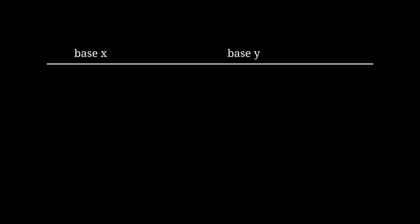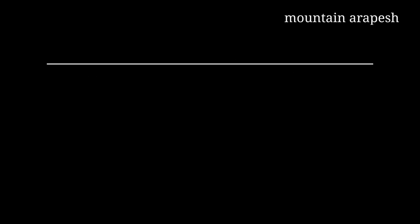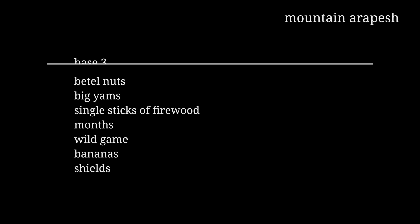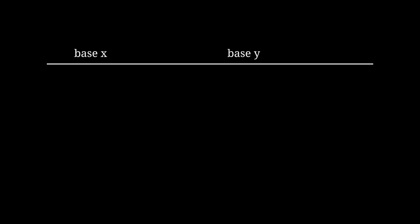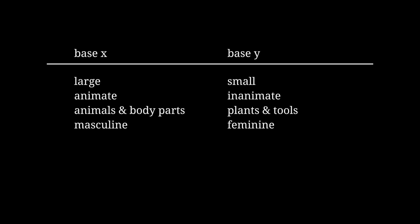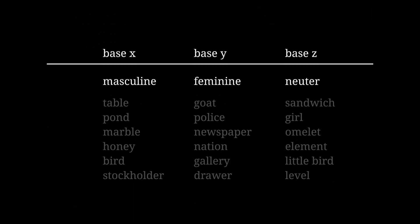Mixed bases can also be applied linguistically. Some stuff might get counted with one base, other stuff with a different base. In Mountain Arapesh, yet another Papua New Guinean language, these things get counted in base 3, and these things get counted in base 4. Papua New Guinea sure has a lot of cool numbering systems. Mountain Arapesh seems to be making a distinction based on size, just really inconsistently. You, dear conlanger, could do something similar — you could mix bases by size, or animacy, or maybe even noun class, or grammatical gender.